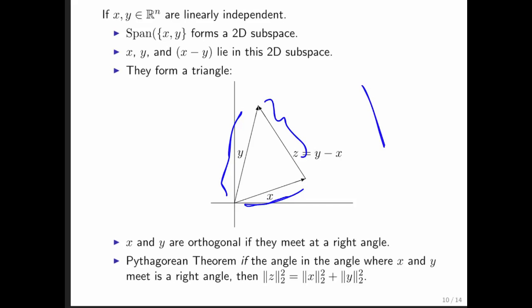So if we have a right triangle like this, and the length of this side is the length of x, and this is the length of y, then the hypotenuse is this side right here, which has length equal to the 2-norm of z, or the length of z.